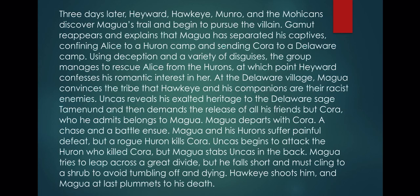At the Delaware village, Magwa convinces the tribe that Hawkeye and his companions are their enemies. Uncas reveals his exalted heritage to the Delaware sage Taminond and demands the release of all his friends but Cora, who he admits belongs to Magwa. Magwa departs with Cora; a chase and battle ensue. Magwa and his Hurons suffer defeat, but a rogue Huron kills Cora. Uncas attacks the Huron but Magwa stabs Uncas in the back. Magwa tries to leap across a great divide but falls short; Hawkeye shoots him, and Magwa plummets to his death.